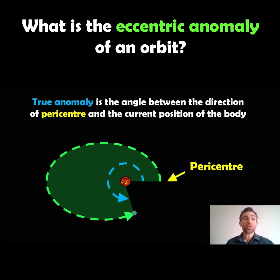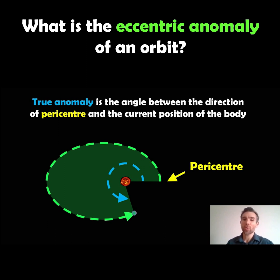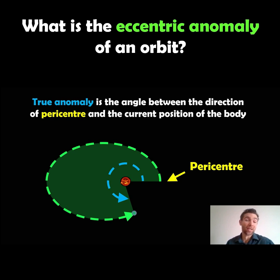Now it's worth noting what the true anomaly is. I have done a separate video on this, but we need it in context of the eccentric anomaly as well. The true anomaly is the angle between the direction of the pericentre and the current position of the orbiting body, or the planet in this example.